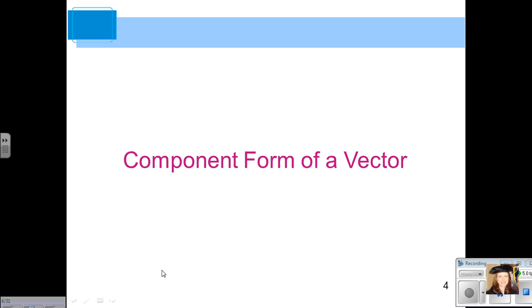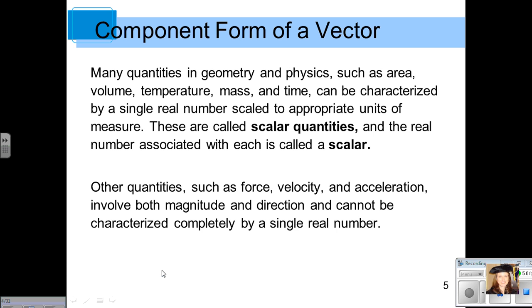First, let's get to looking at the component form of a vector. Many quantities in geometry and physics, such as area, volume, temperature, and so on, can be characterized by a single real number scaled to appropriate units of measure. Those are called scalar quantities. For example, you tell someone how tall you are, you say you're 5'9". And the real number associated with each is called a scalar.